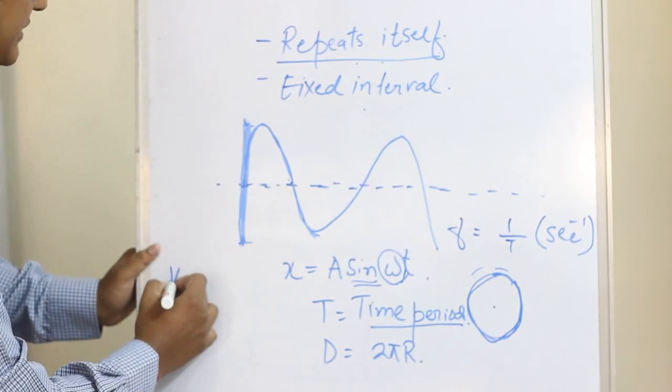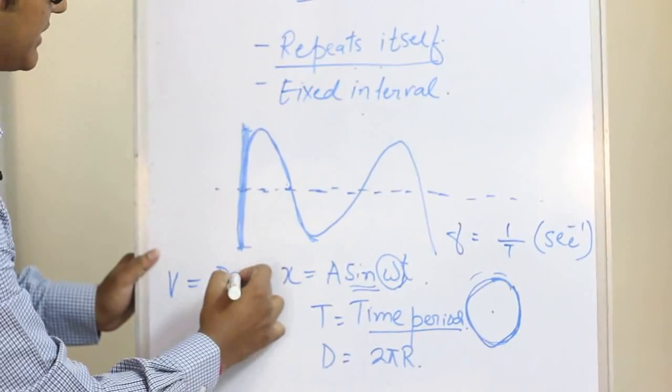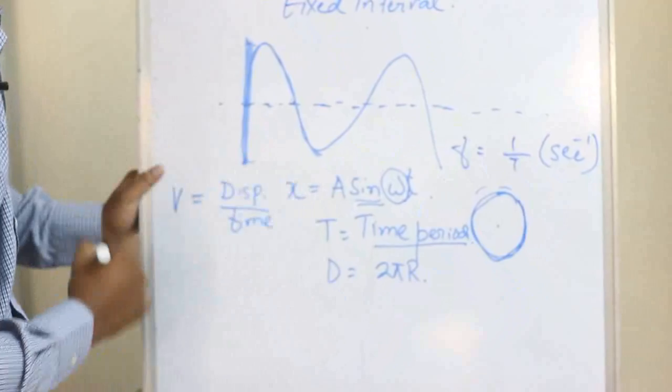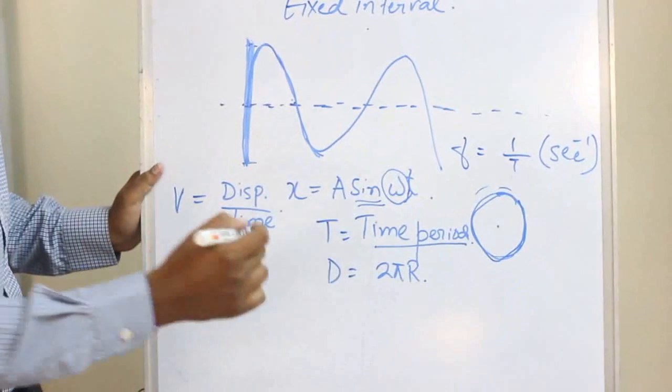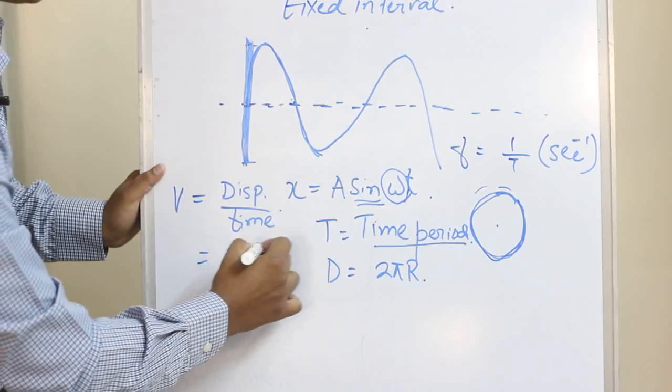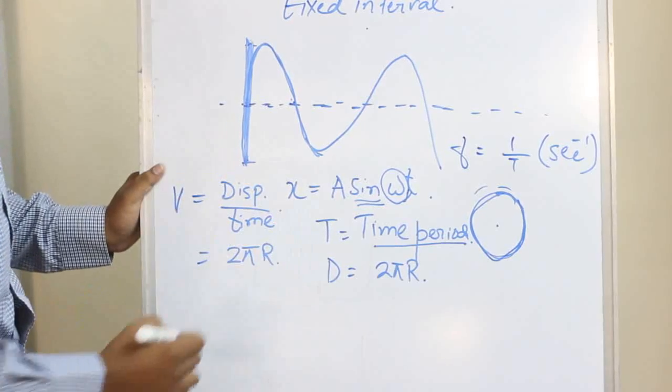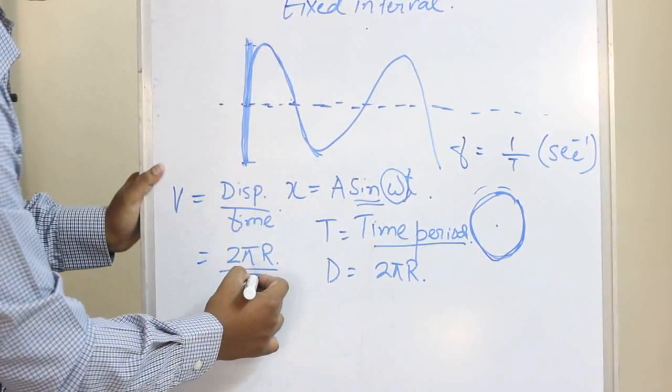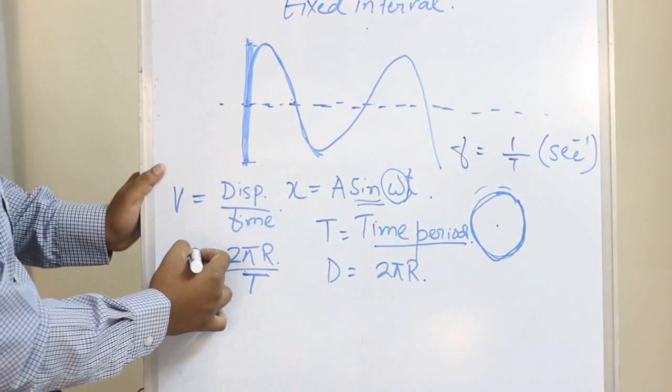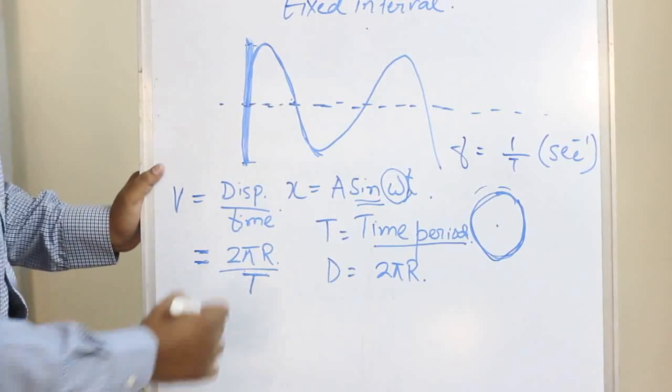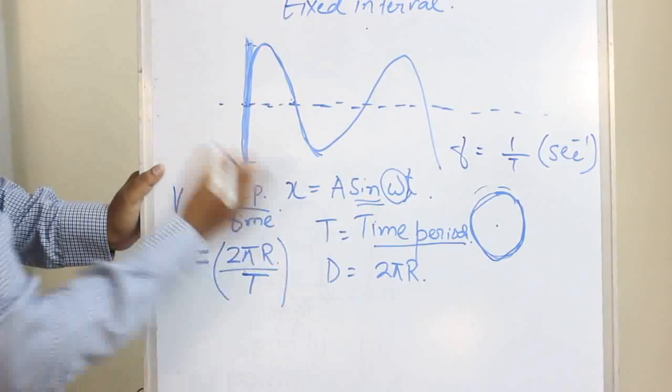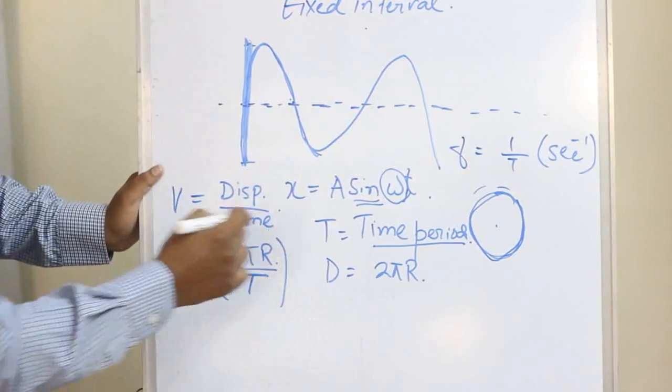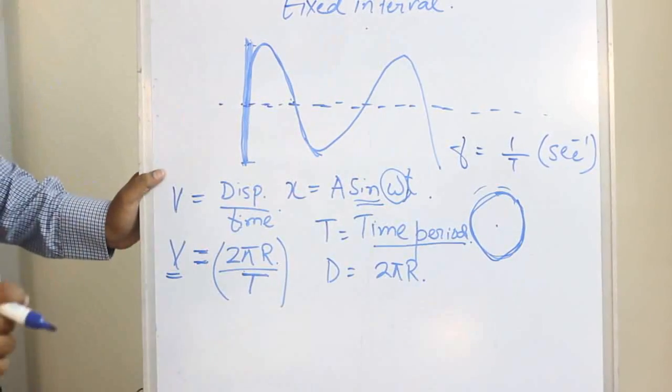We know that velocity equals displacement upon time. What is the displacement here? 2πR. And what is the time here? Let's say it's T. So it's 2πR by T. That is the linear velocity of the body.